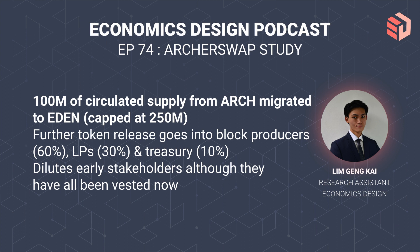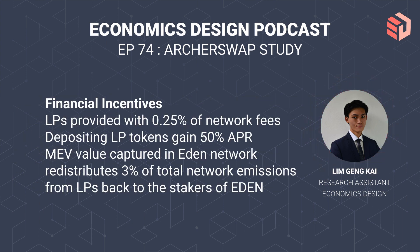Previously for the ARCH token, about 100 million of circulated supply was airdropped and released, and it was subsequently migrated to EDEN, which is now kept at 250 million tokens. Further token releases will go into block producers, liquidity providers, the treasury, and different percentages. This dilutes early stakeholders, although their holdings are now fully vested. Liquidity providers gain about 0.25% of network fees, slightly lower than traditional AMMs like Uniswap where they get about 0.3%, and depositing LP tokens gains about 50% APR. Any MEV value captured in Eden Network will redistribute 3% of network emissions from LPs back into EDEN stakers, so traders who stake EDEN will be redistributed the MEV value captured in the network.